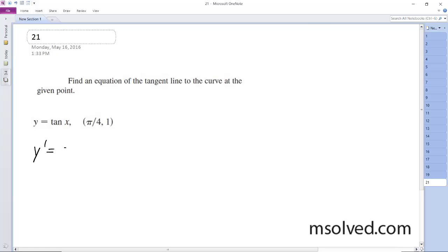So y prime, in this case, is equal to secant squared of x. And pi over 4 is right here. So this is 1, 1, root 2.